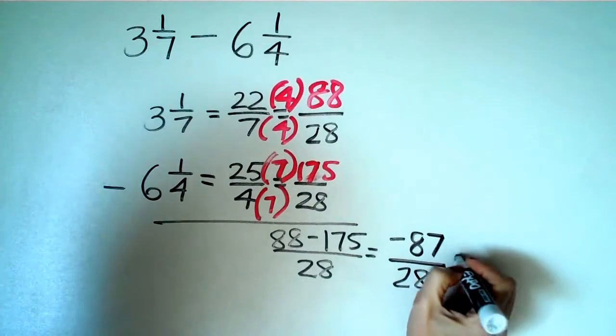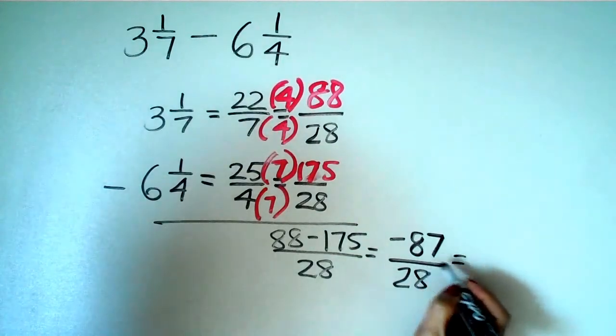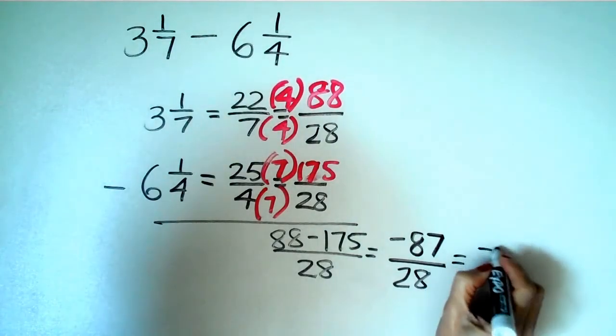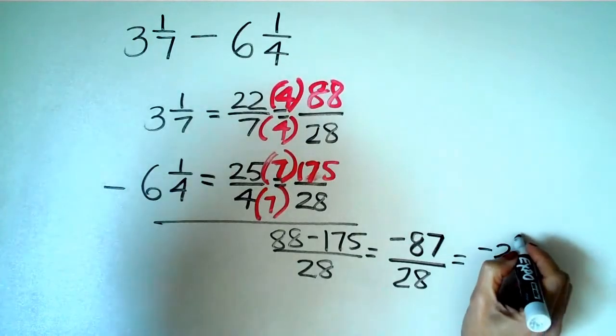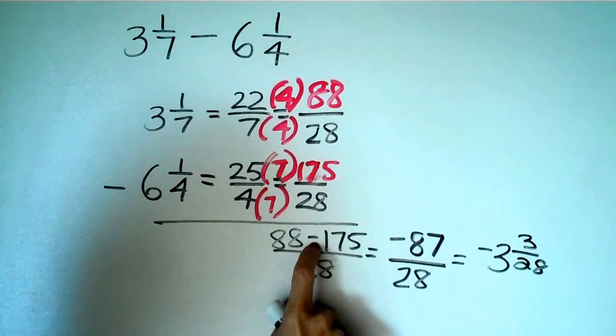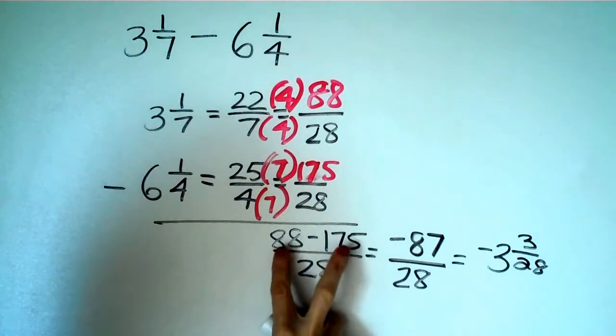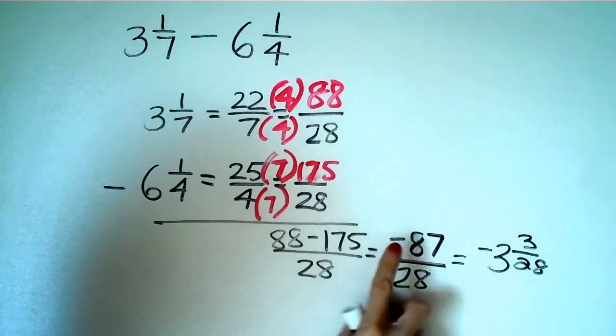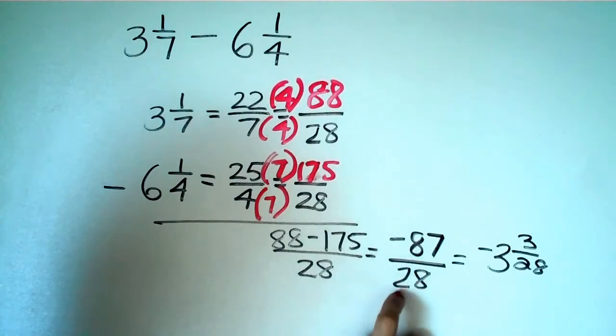And if you did change this from an improper to a mixed number, it would be negative three and three over twenty-eight. So again, here we went keep change opposite. We had two numbers. We had a subtract. We got a negative eighty-seven over twenty-eight.